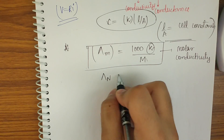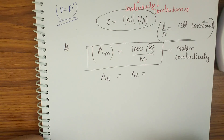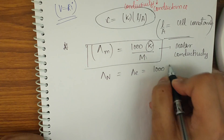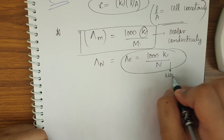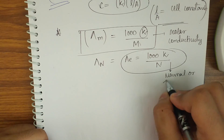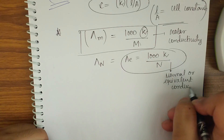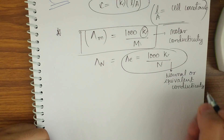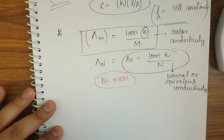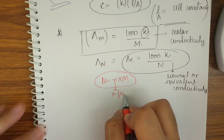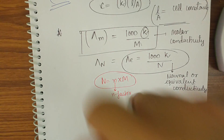Normal or equivalent conductivity, written as λn or λe, is equal to 1000k/N. From mole concept, we know that N = n-factor × M, so we can relate molarity and normality, and hence also relate molar and equivalent conductance.